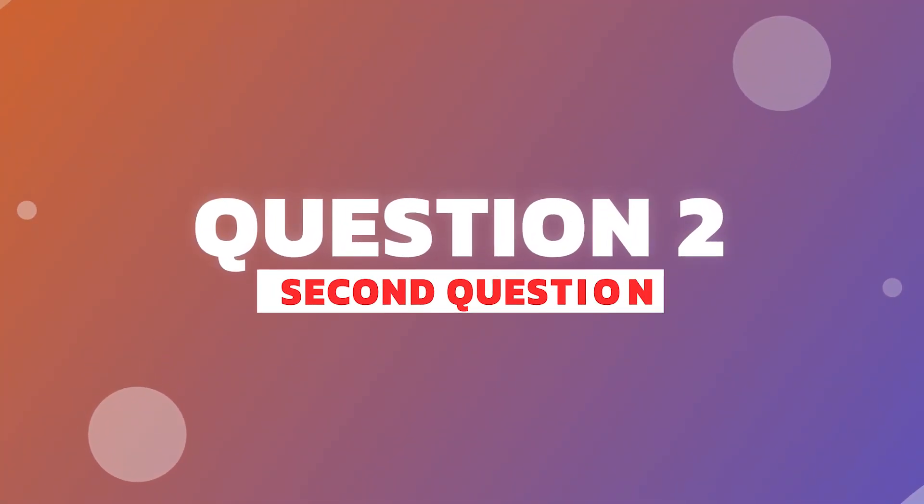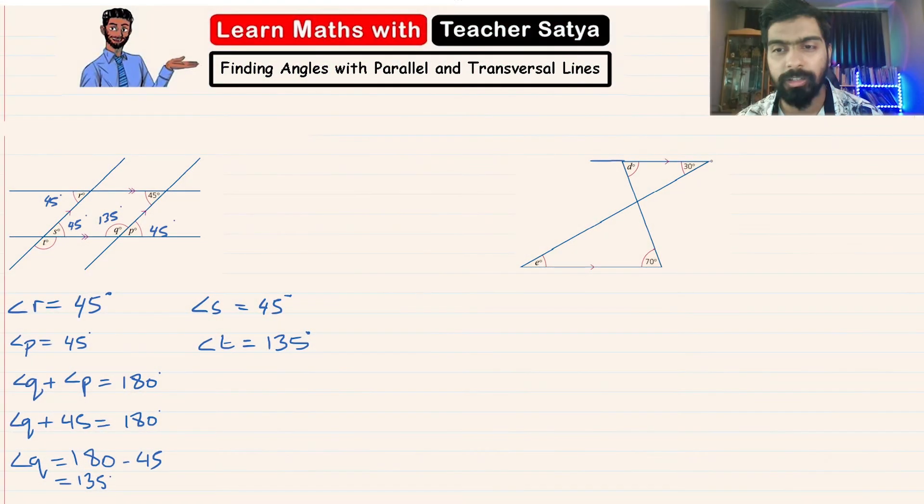Now in these kind of cases, if it makes it easier for you to just make these lines a bit longer, you can go ahead and do that. Because in some cases for some students, by doing this they are able to solve the question with no problem at all. Now angle E, we see that angle E is the alternate angle of angle 30 degrees, so angle E is equal to 30 degrees.